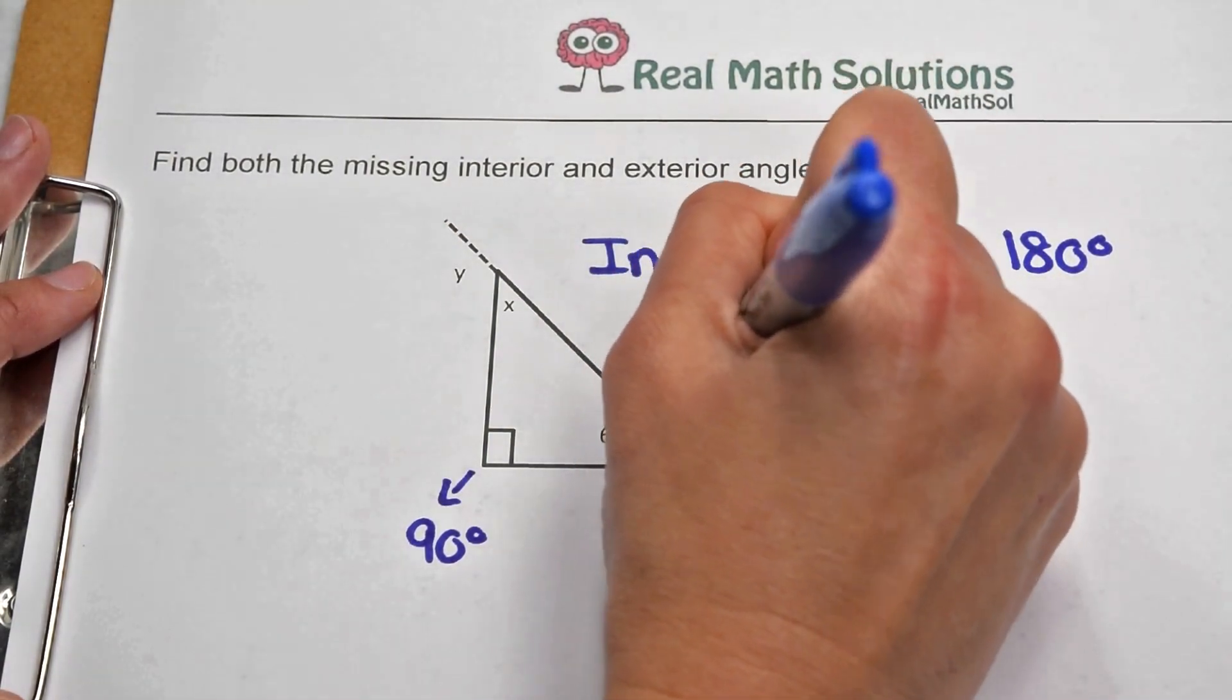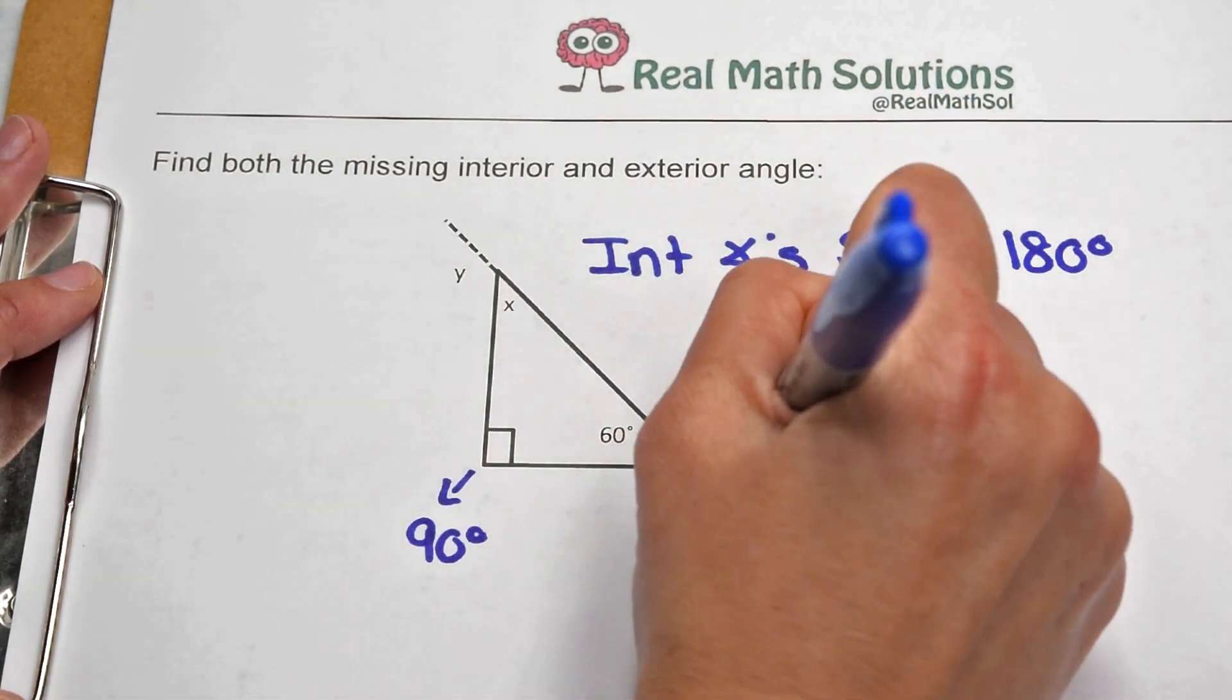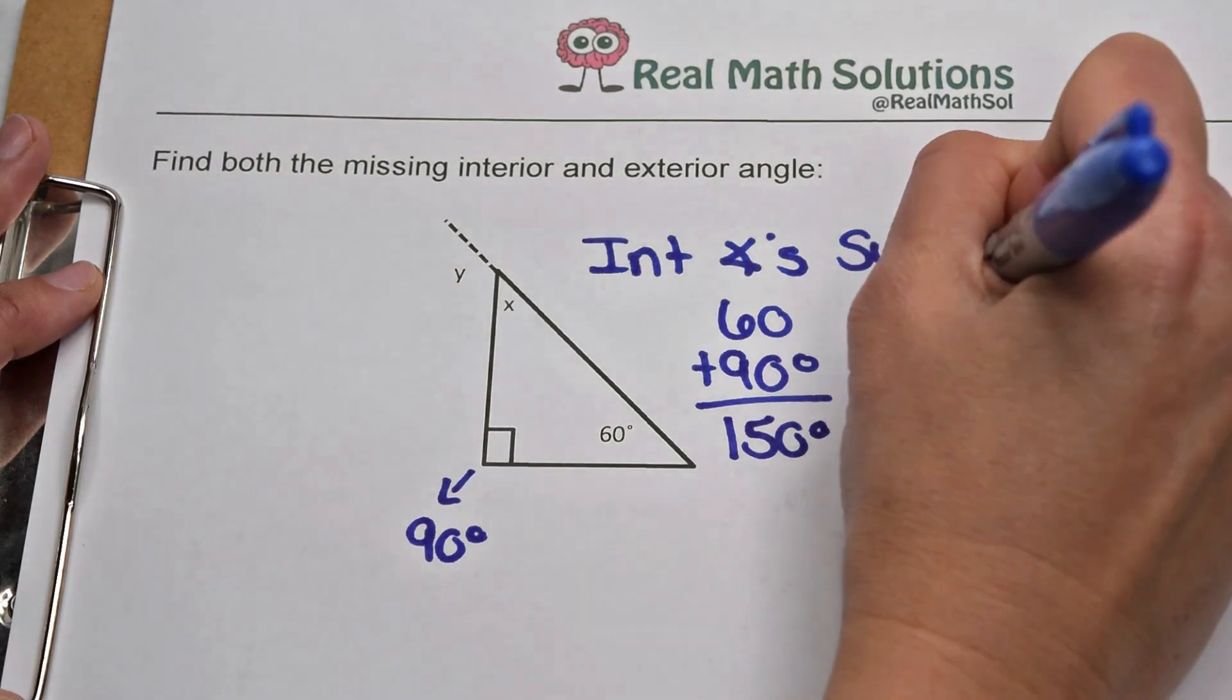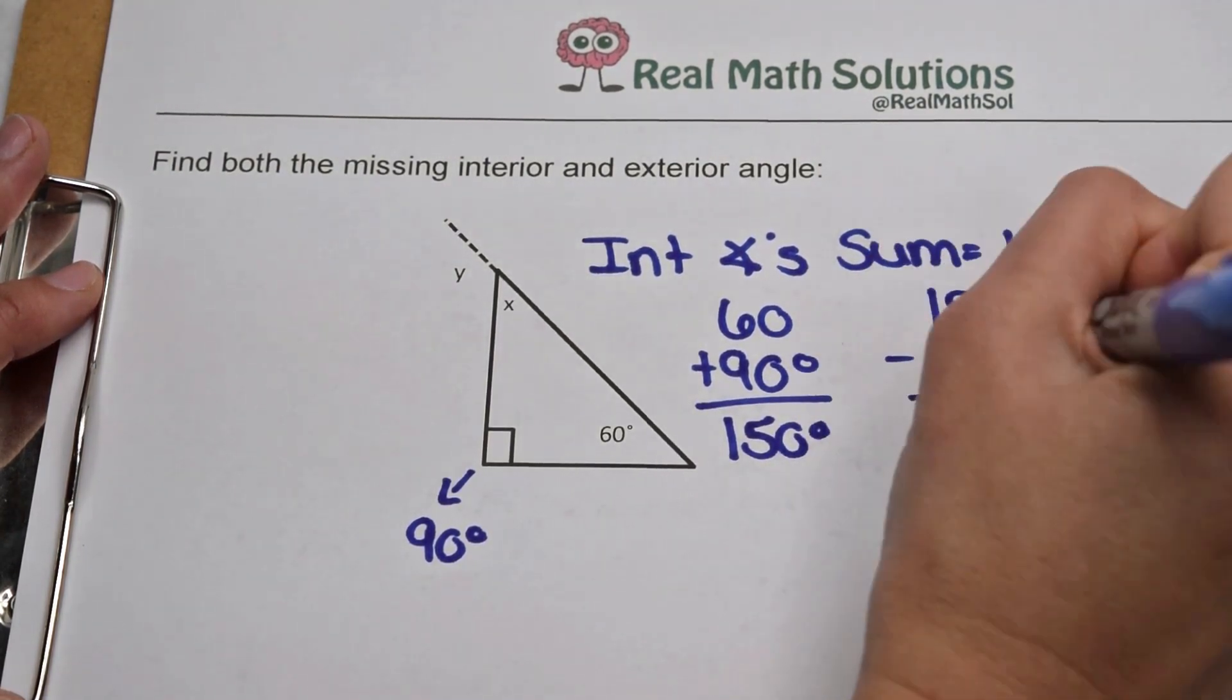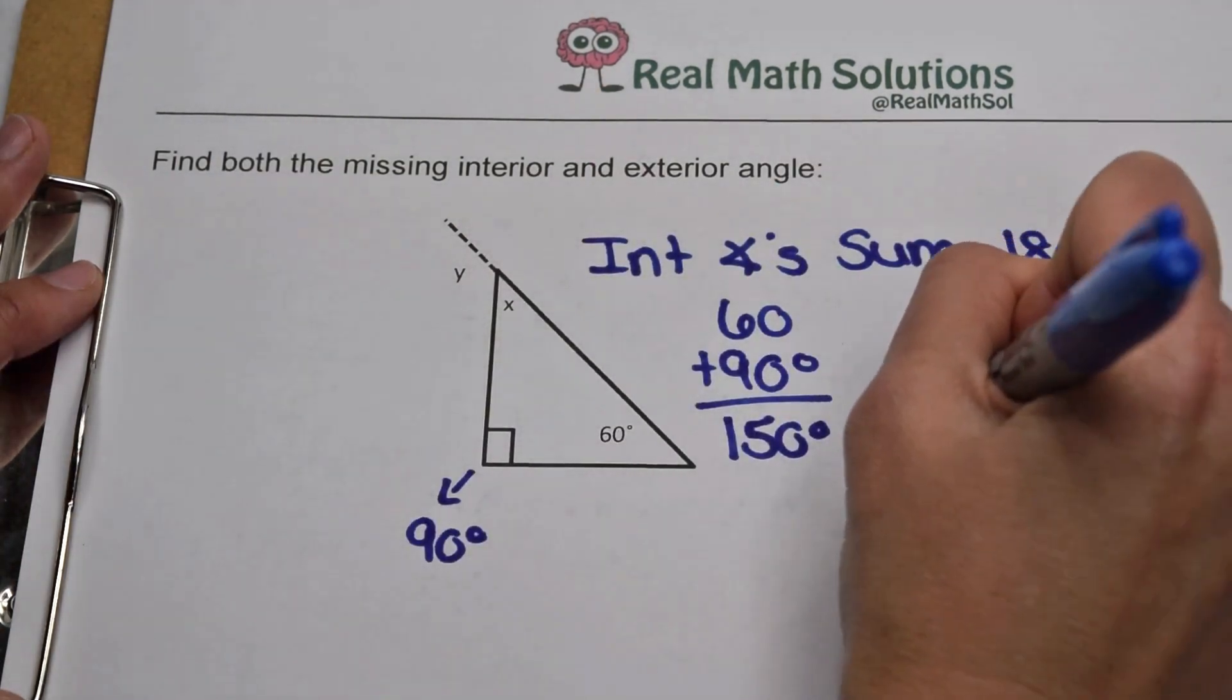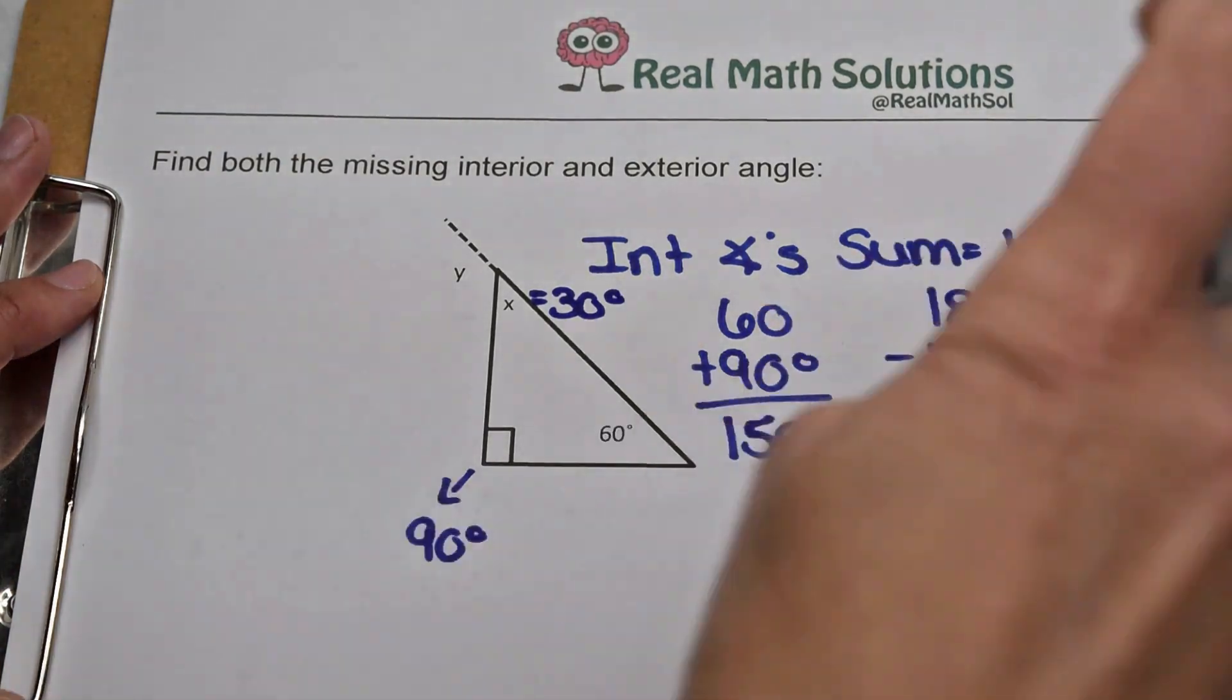So we can start by adding up the ones we know. When we add together 60 plus 90, that gives us a total of 150. We can then subtract that 150 from our 180 degree interior angle sum to find out what's left. When we do, that gives us 30 degrees to tell us x is going to be worth 30 degrees.